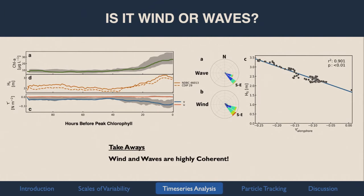Thinking about wave direction in a simplistic way: as the alongshore wind stress becomes more negative — blowing harder to the south — we get larger waves. Looking at the actual wave directions, they're largely coherent, meaning they're moving in the same direction. This reinforces the idea that wind is contributing to Stokes Drift — in our scenario, waves are almost always propagating in the same direction, at least offshore.